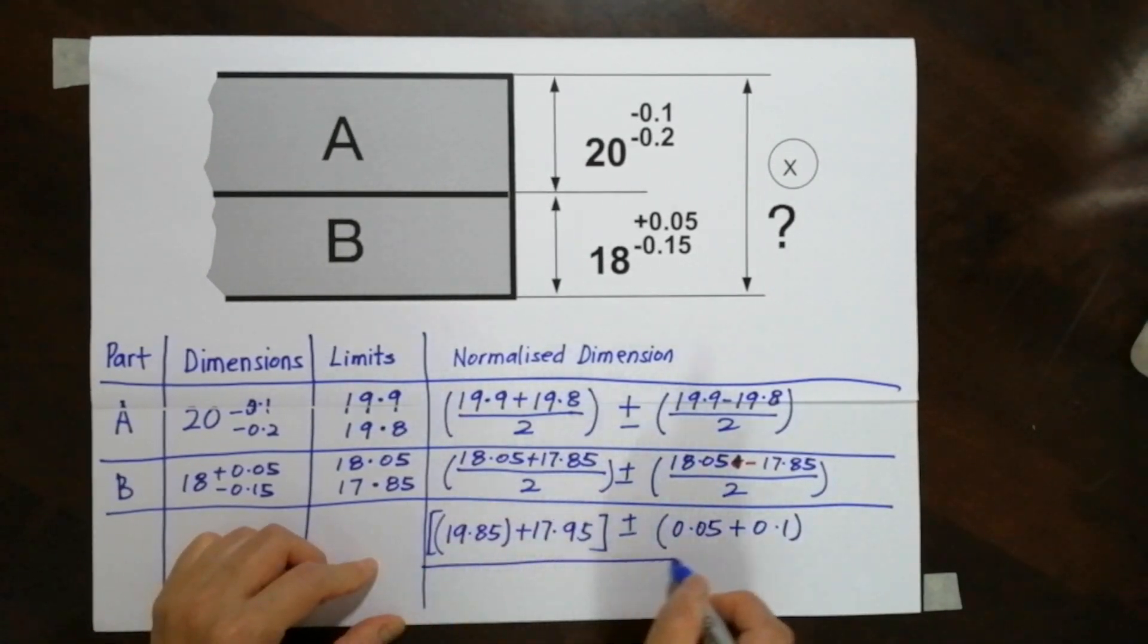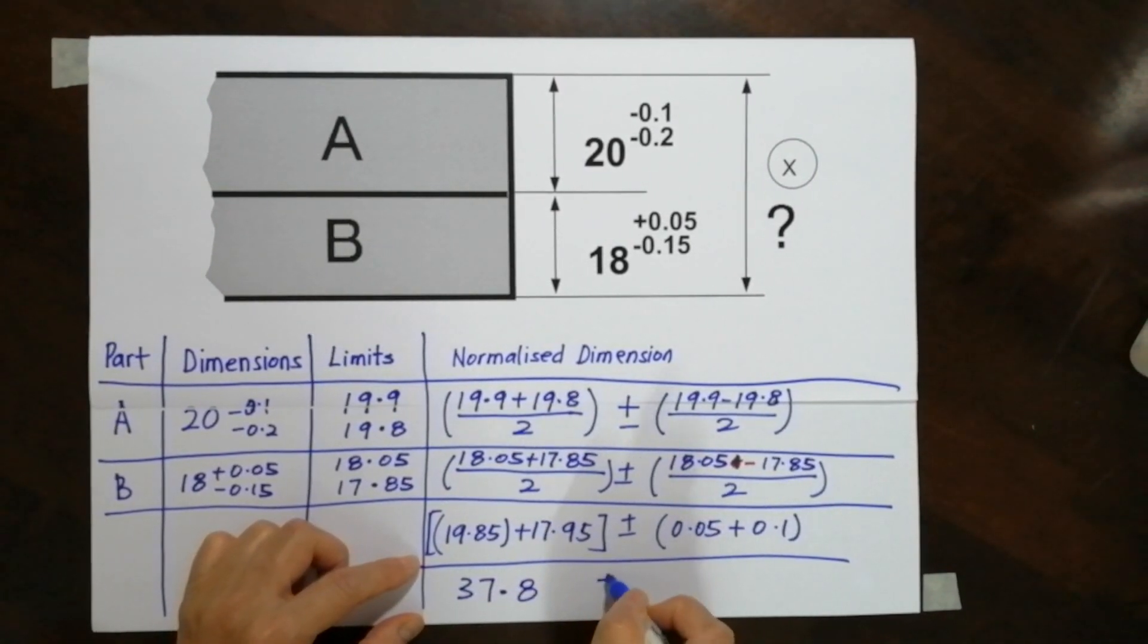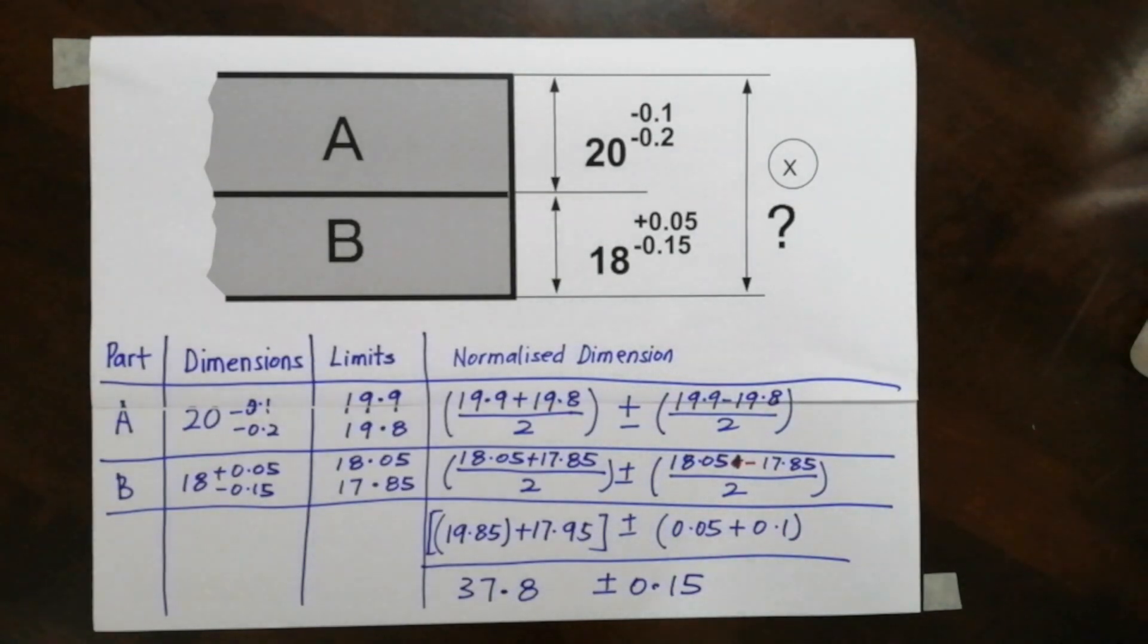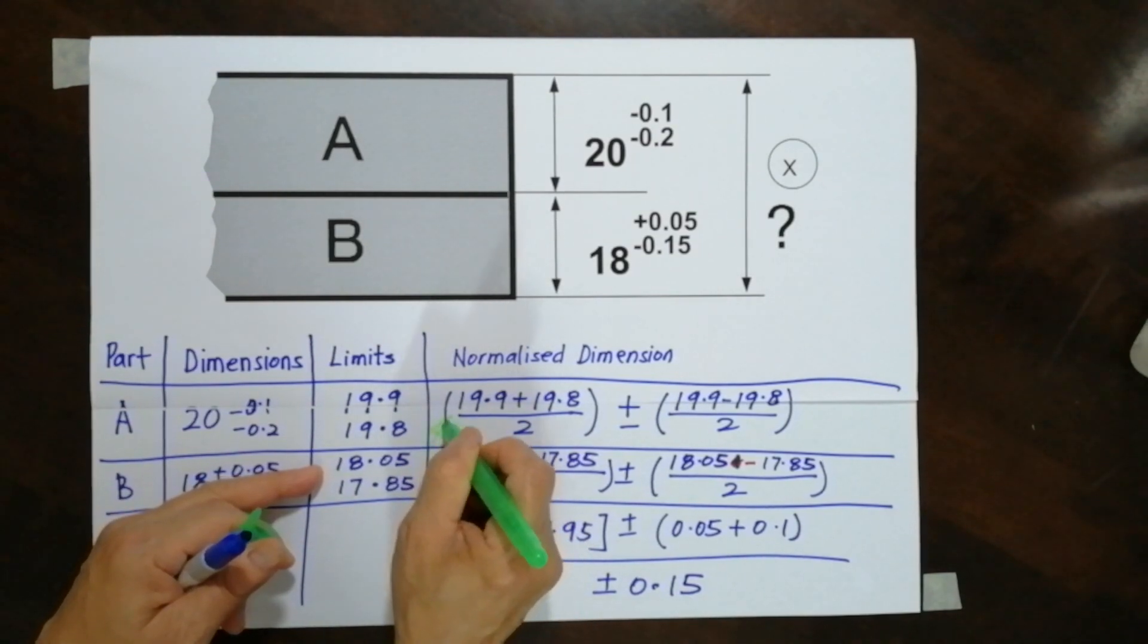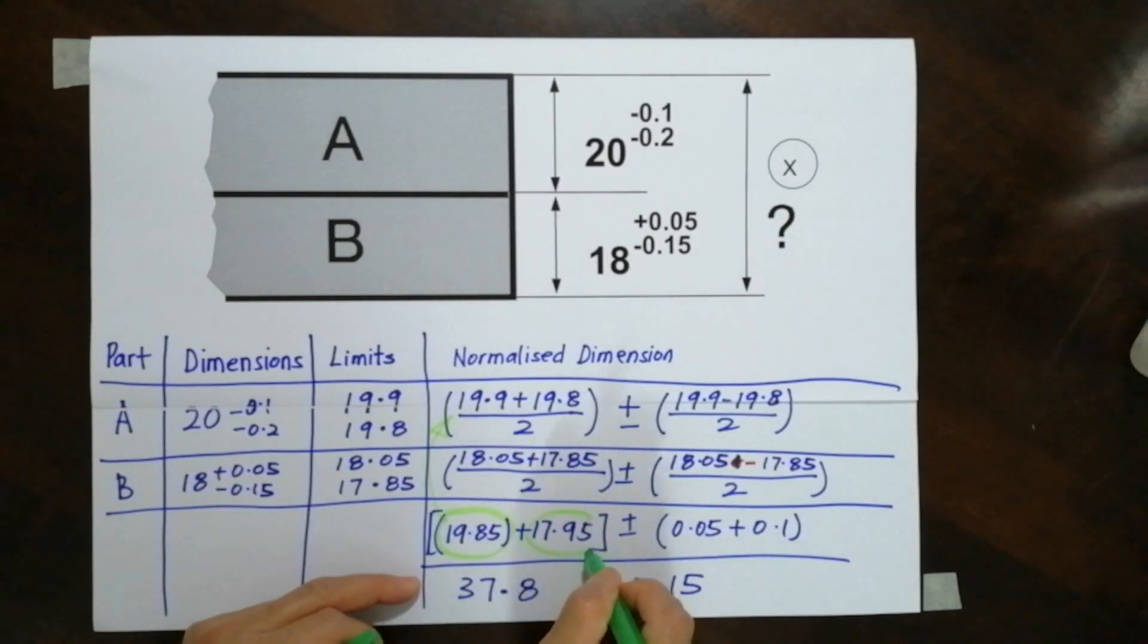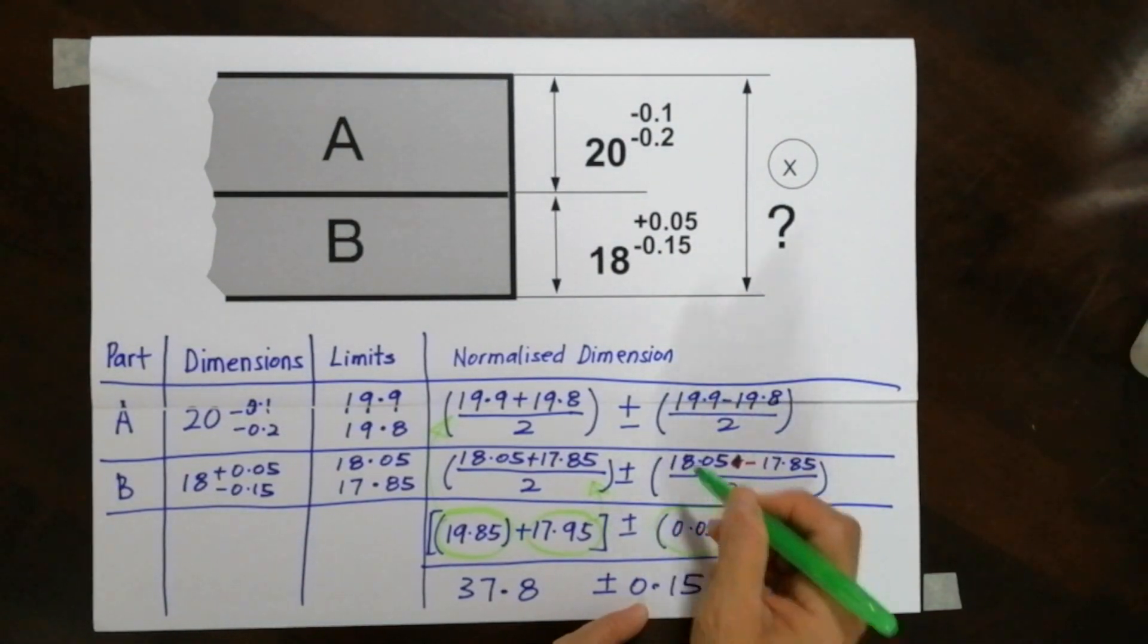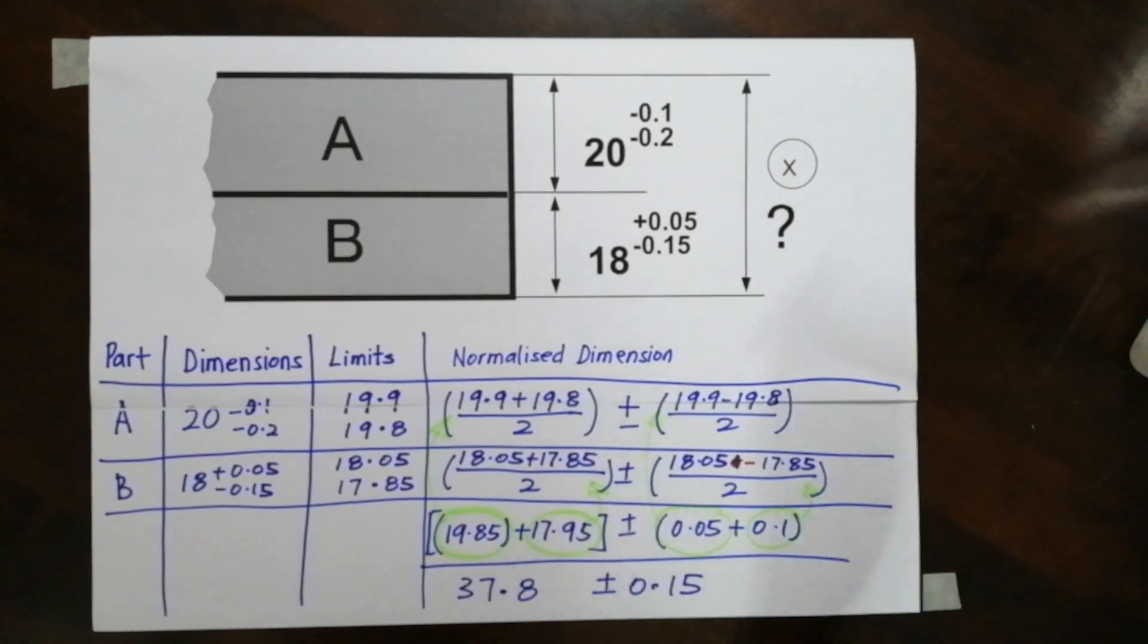So the answer is, combine these two, I will have 37.8 plus and minus 0.15. A bit confusing over here, just let me just return it here. Just remember, these values are taken from here. And these values are taken from here. And this value is taken from here. This value is taken from here. Okay, thank you.